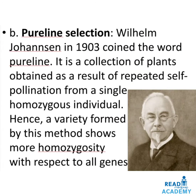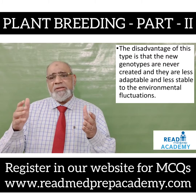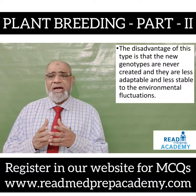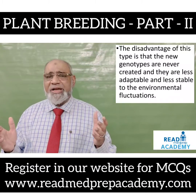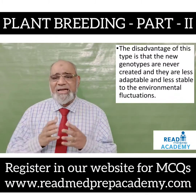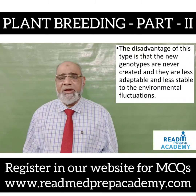What is pure line selection? Wilhelm Johannsen in 1903 coined the word pure line. It is a collection of plants obtained as a result of repeated self-pollination from a single homozygous individual. Hence, a variety obtained by this method shows more homozygosity with respect to all genes. The disadvantage of this type is that new genotypes are never created and they are less adaptable and less stable to environmental fluctuations.